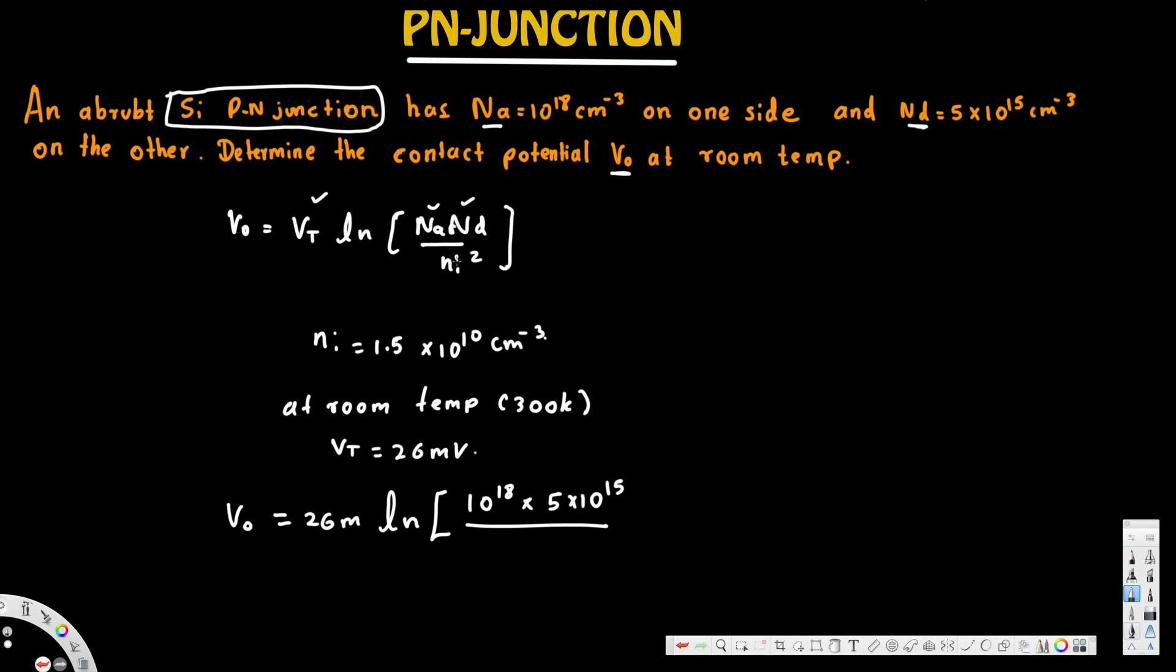The intrinsic concentration, ni squared. So if we square this one, 1.5 squared is 2.25, and here we have 10 to the power 10. If we square 10 to the power 10, that's going to become 10 to the power 20. And if you calculate this one, you are going to get 799 millivolts.